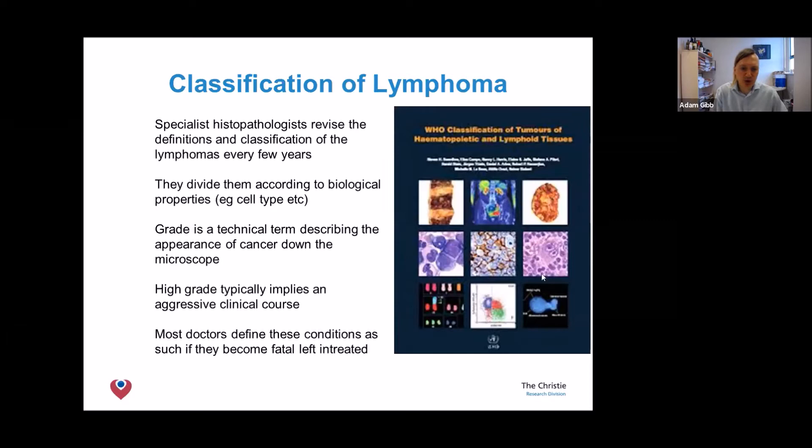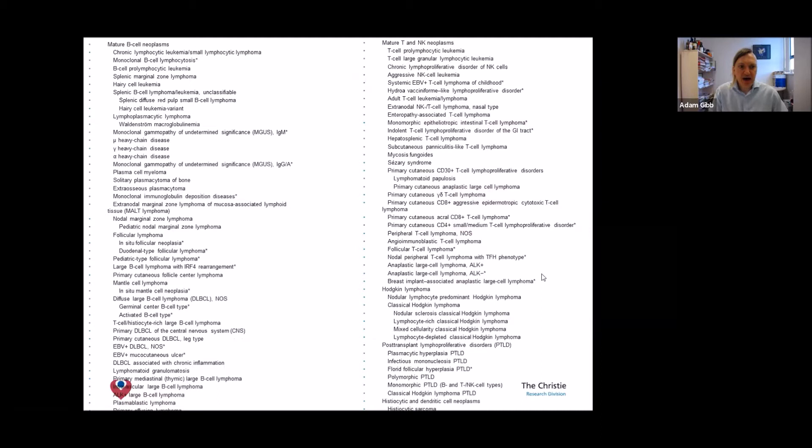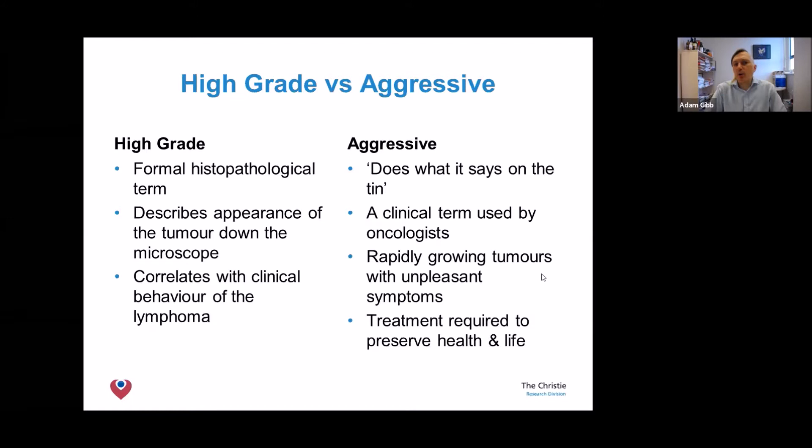Every couple of years the World Health Organization classifies these diseases in a book which gets thicker and thicker. This slide — you'll need your glasses to squint at it — is a list of at least 70 different lymphomas, which illustrates the breadth of the problem. This list includes B-cell diseases, T-cell diseases, low-grade lymphomas, and high-grade lymphomas.